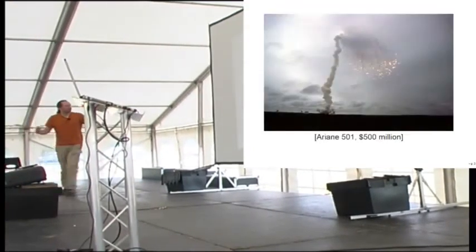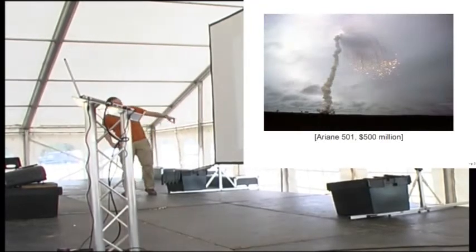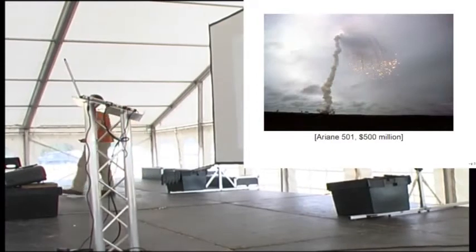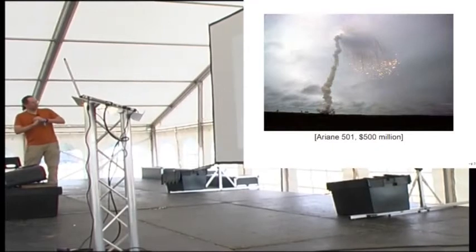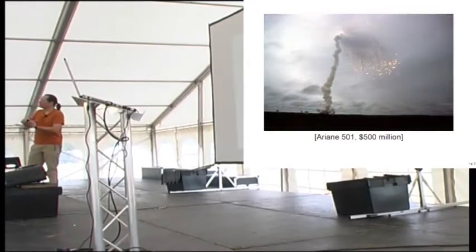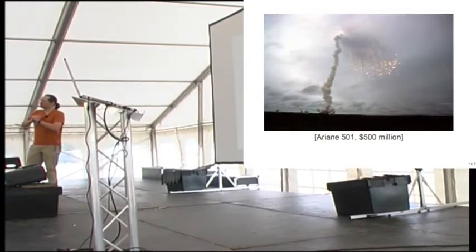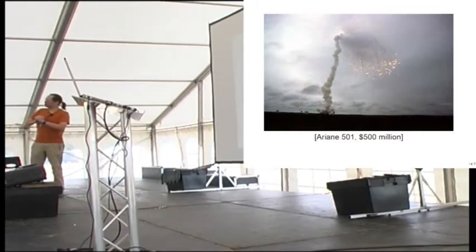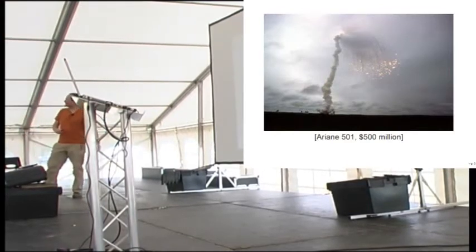So sometimes they go wrong in spectacular ways. And you get fireworks. So this, if you could see it, would be the Ariane 501 fireworks. That's about half a billion dollars worth of sparkle. You don't see that every day, fortunately. And why? Because they were using one component of the guidance software from Ariane 4. And Ariane 4 didn't go sideways during the launch as much as Ariane 5 did. And therefore one of the sideways values in the guidance software overflowed.